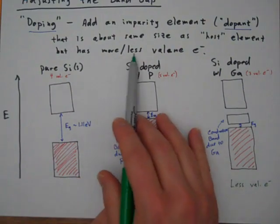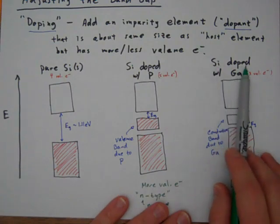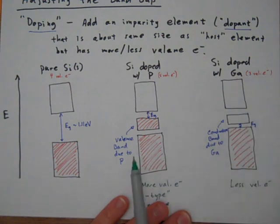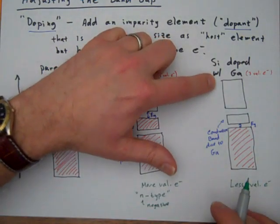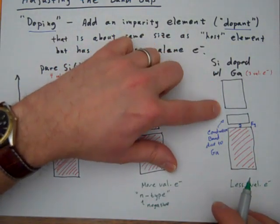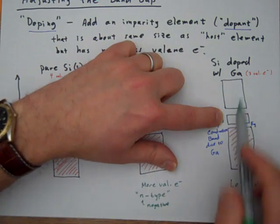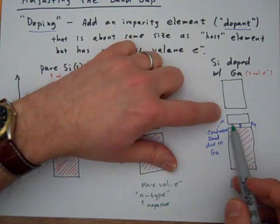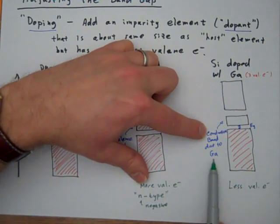We can also do that by adding a substance that has fewer valence electrons. So in this case, we're going to dope the silicon with gallium. Now gallium, if you look on the periodic table, only has three valence electrons. This is the case where we have less valence electrons. So now what we have done is we've created some new places for electrons to go, new virtual orbitals that come from gallium, and those orbitals have different energies. So we have a new empty band, a new conduction band, that's due to the gallium.